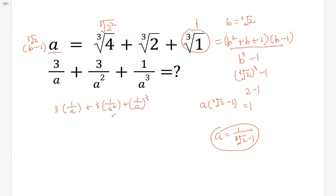So 1 over A, we can get 1 over A. So 1 over A, that's just cubic root of 2 minus 1.